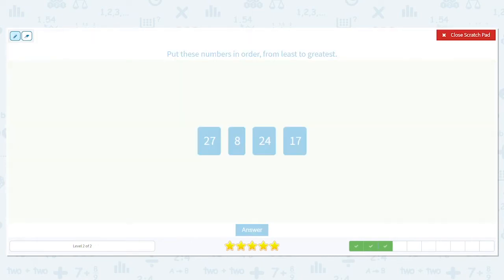Again, we want to put these numbers in order from least to greatest. 27, 8, 24, 17. Which one of these would go first as the least? Think of age. Which one of these would be the youngest? An 8-year-old.